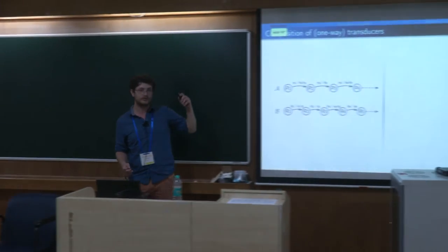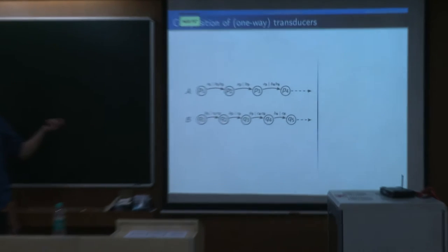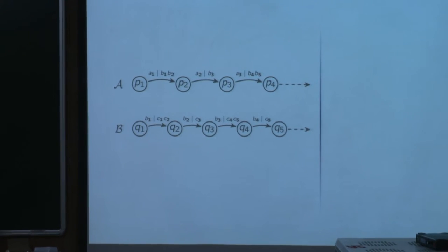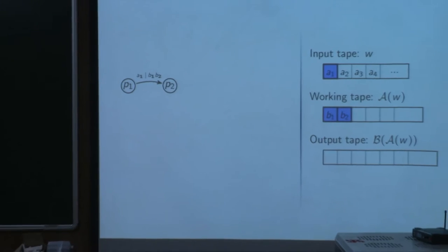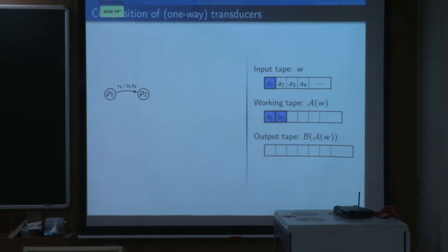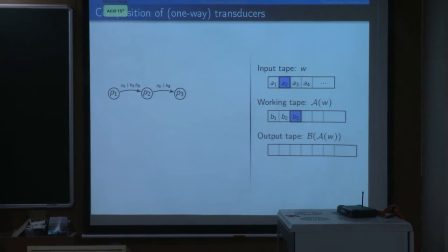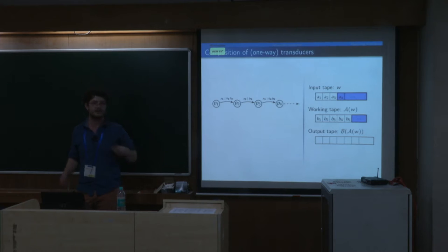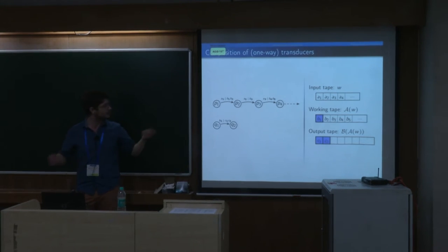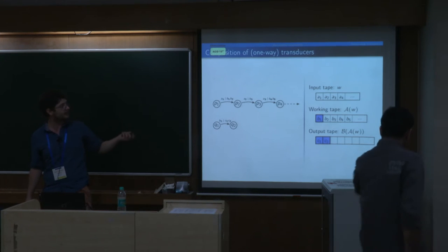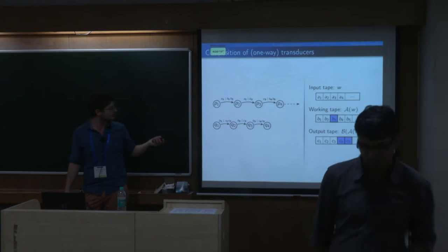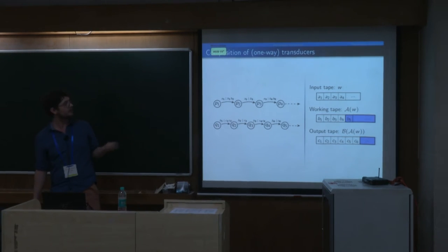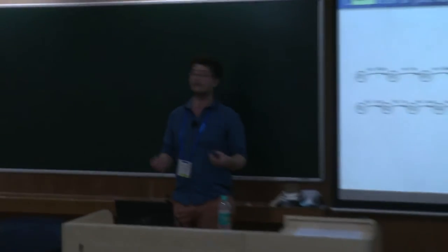We're dealing with one-way transducers. You have transducer A that reads letters A's and produces letters B's, and transducer B that reads B's and produces C's. The first easy way to do composition is to run transducer A on the input and produce the output on a working tape. But if you want to do it with only one machine, you cannot, because the working tape is of unbounded size — you can't realize it with a finite state machine.